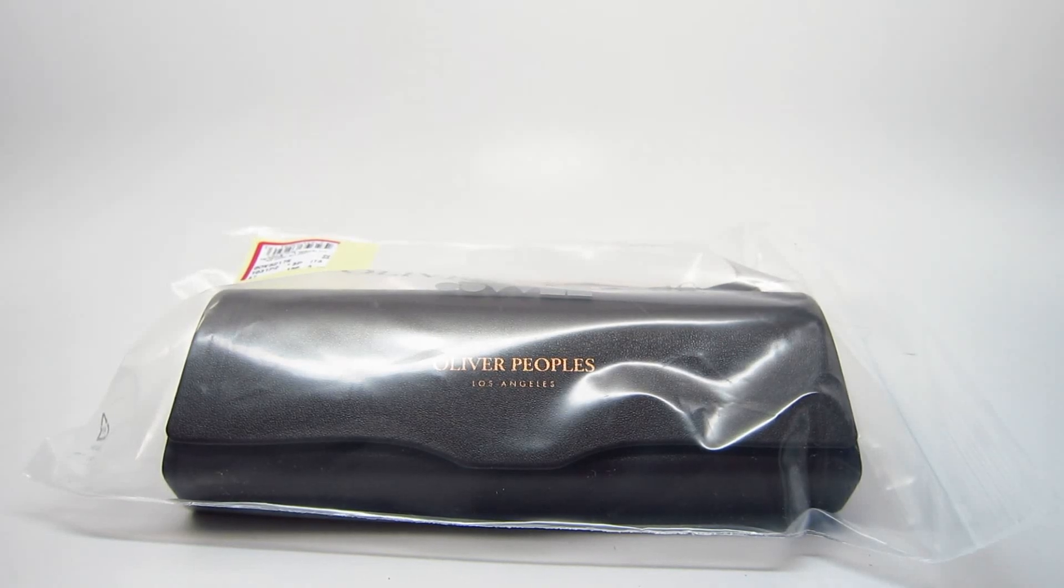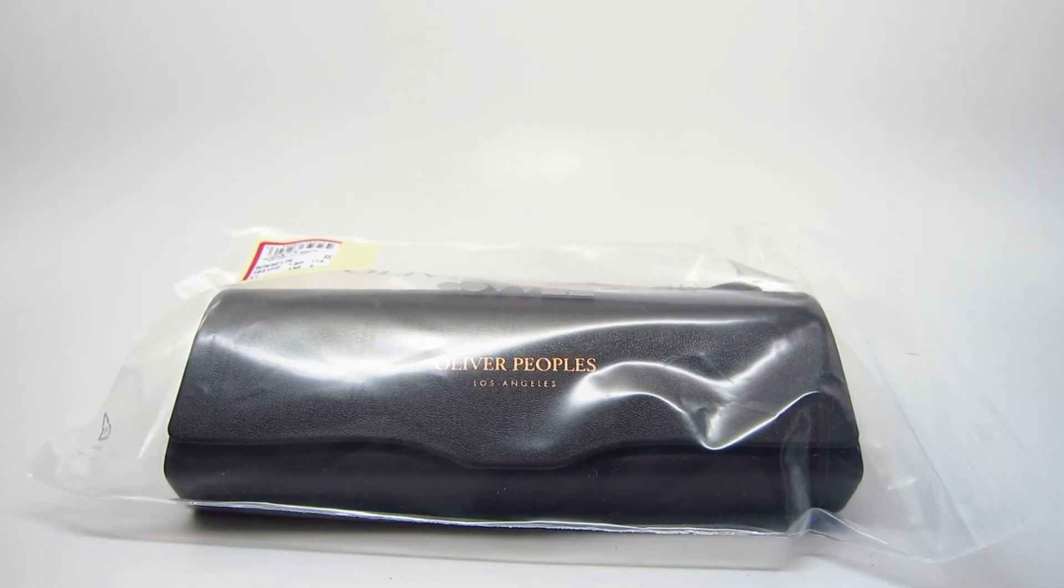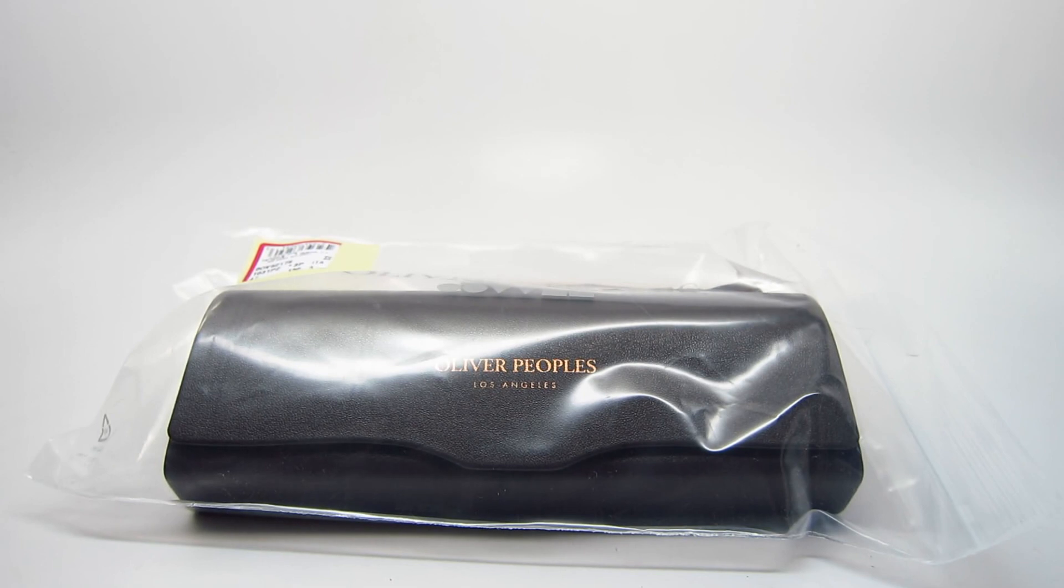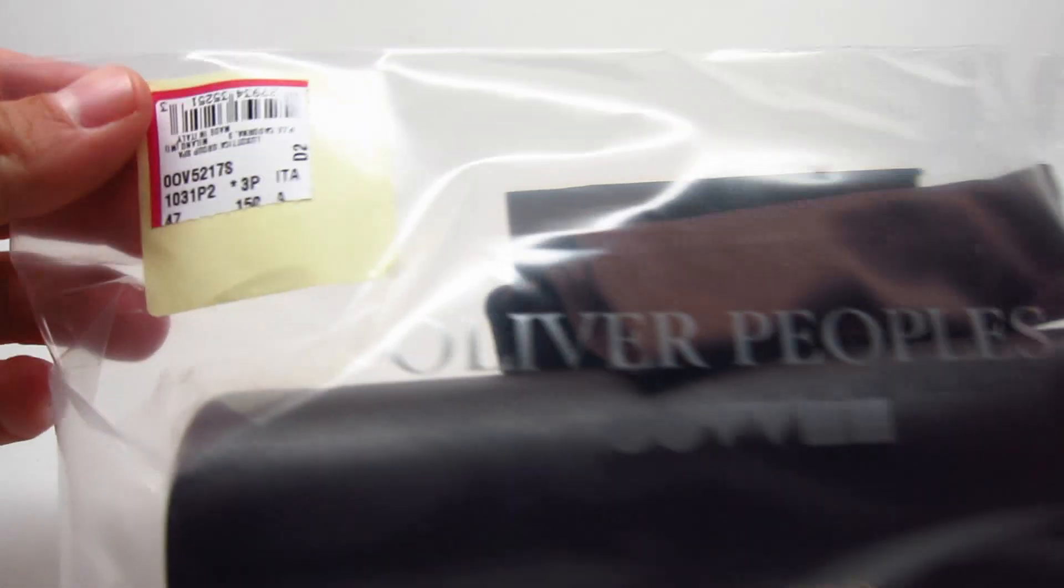Hey guys, today we're going to be unboxing another Oliver People's Gregory Peck sunglasses. The model number is the OV-5217S.